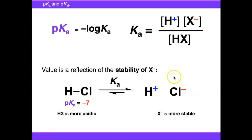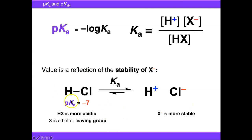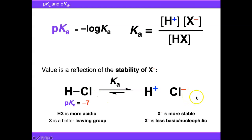The pKa also tells us about Cl⁻ on the other side. Cl⁻ is more stable because the equilibrium is tilted in this direction, and chloride is therefore a better leaving group — it's willing to leave the molecule with a pair of electrons. Because Cl⁻ is more stable, it tells us that Cl⁻ is less basic or less nucleophilic. The more stable your anion is, the less likely it is to want to throw that extra pair of electrons around, picking up protons or attacking things as a nucleophile.